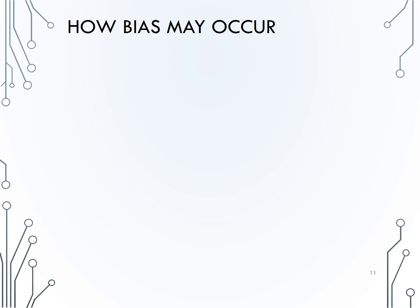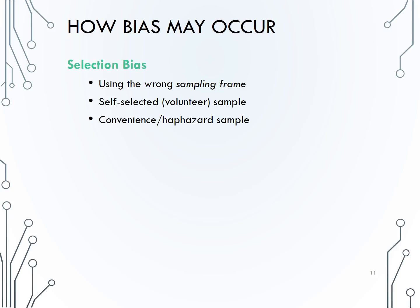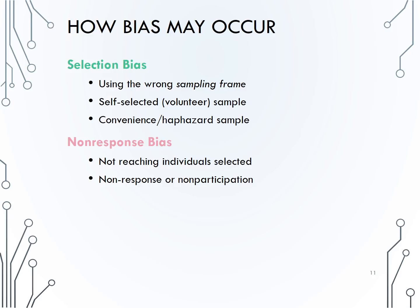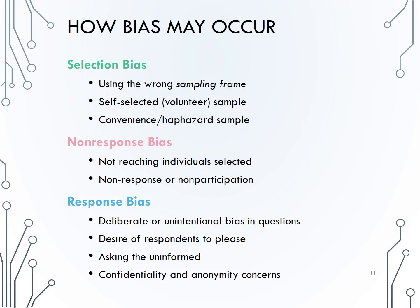How might these biases occur? Selection bias occurs from using the wrong sampling frame, volunteer samples, or convenience sampling — sampling those who are convenient to you. Non-response bias occurs when you're not able to reach individuals selected for a sample, or you can contact them but they choose not to participate. Response bias occurs from deliberate or unintentional bias in question wording, the desire of respondents to please or seem informed, or confidentiality and anonymity concerns.